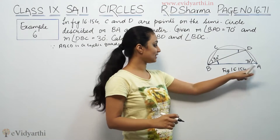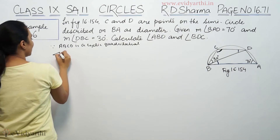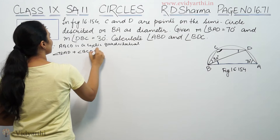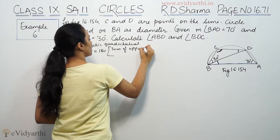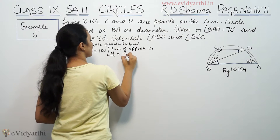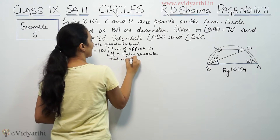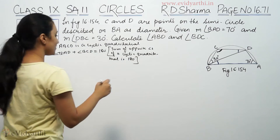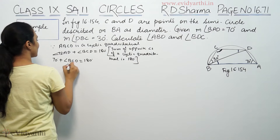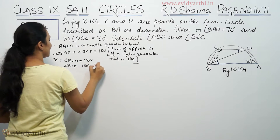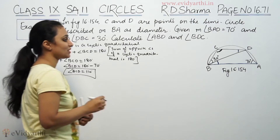Since ABCD is a cyclic quadrilateral, opposite angles sum to 180 degrees. So angle A plus angle C equals 180 degrees. That means angle BAD plus angle BCD equals 180 degrees. Angle BAD is 70 degrees, so angle BCD equals 180 minus 70, which is 110 degrees.